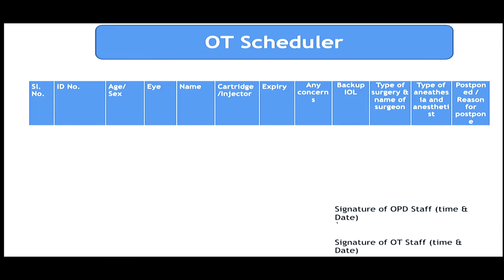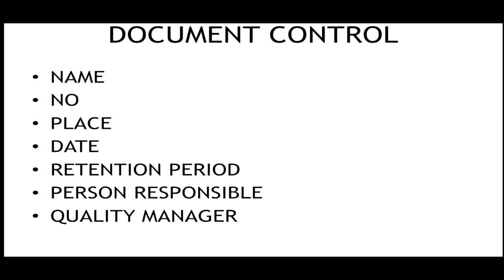An OT list is the most important document and should be given due respect — it has everything. You can modify and have your own OT document. Every document you create should have a document control: the name of the document and the number of the document — we spoke about indexing. Every SOP will also have a number and a place where the document will be. A working SOP should be available at the workplace — not somewhere in the administrative office. That is the most important thing.